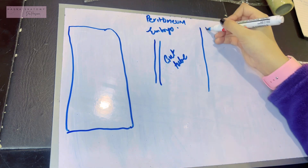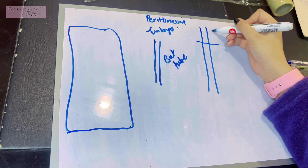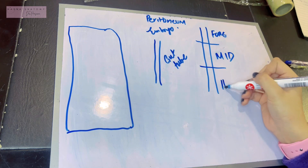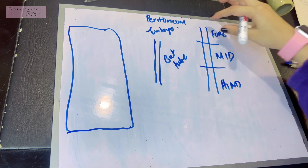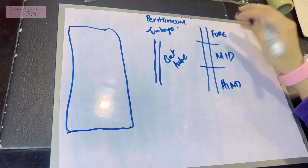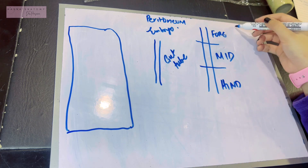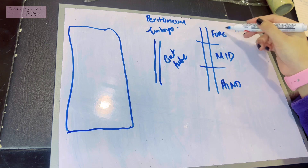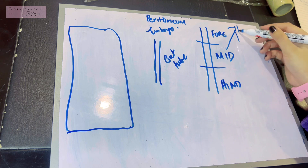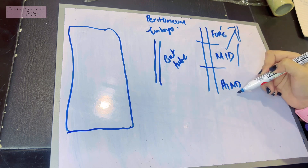The gut tube itself was divided into three parts: the foregut, the midgut, and the hindgut. Your entire digestive tract is formed by these three parts. Each of these three parts had their own arterial supply — the abdominal aorta gave the celiac branch for the foregut, the superior mesenteric branch for the midgut, and the inferior mesenteric branch for the hindgut.